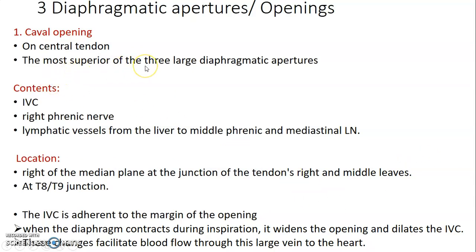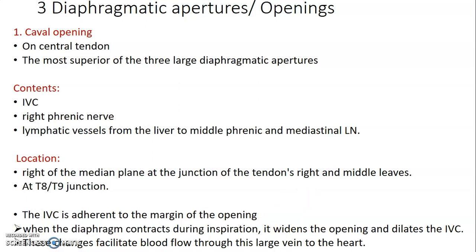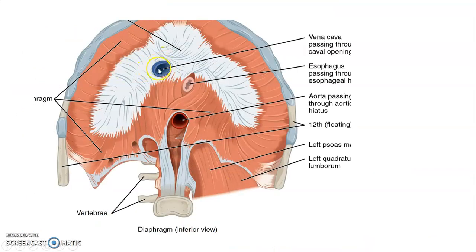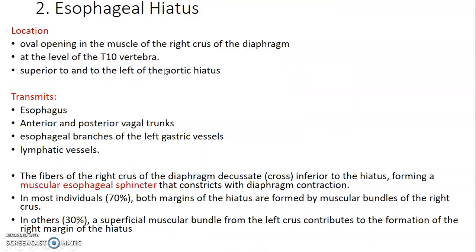The diaphragm has several apertures. The vena cava opening is in the central tendon, allowing the inferior vena cava, the right phrenic nerve, and lymphatics from the liver to the middle phrenic and mediastinal lymph nodes. This opening is at the T8–T9 junction to the right of the median plane. When the diaphragm contracts during inspiration, this opening widens and dilates the inferior vena cava, facilitating blood flow to the heart.